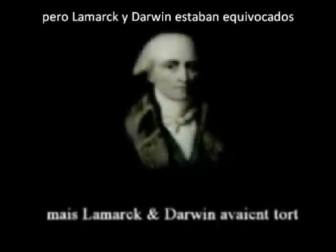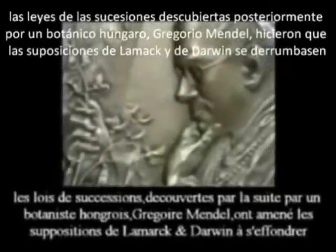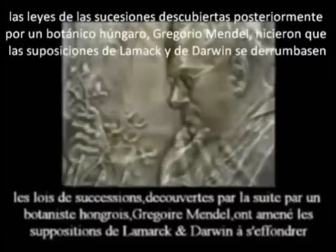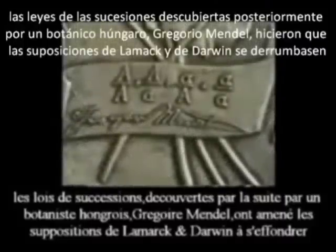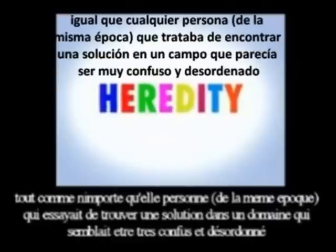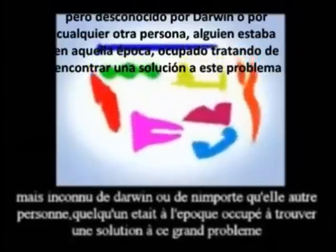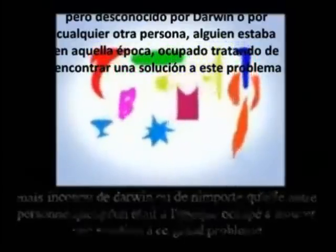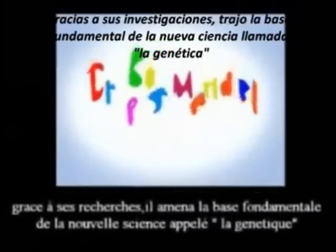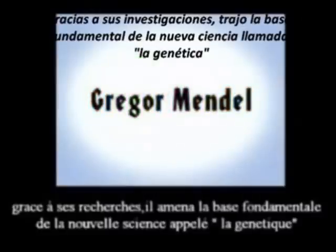But both Lamarck and Darwin were wrong. The laws of inheritance discovered by Austrian botanist Gregor Mendel caused Lamarck's and Darwin's assertions to collapse. It is not surprising that Darwin got heredity wrong — so did everyone else who tried to find an underlying pattern in a surface picture that seems so random and disorderly. But unbeknownst to Darwin or anyone else, someone was busy solving this great puzzle. In the process, he laid the groundwork for the new science of genetics.